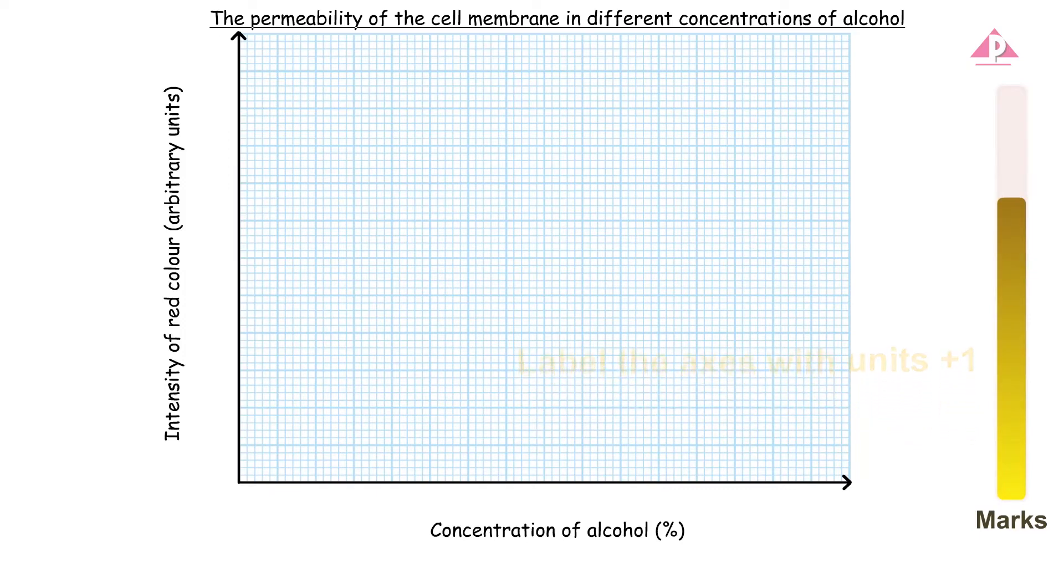The remaining marks are given to the plotting and joining of data points, usually one mark for each set of data to be plotted as one line. Let us follow the steps below to get the full score.